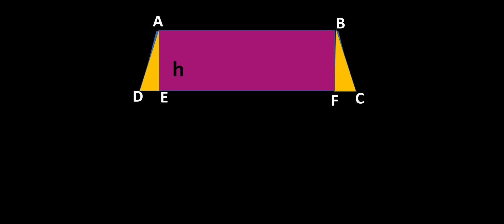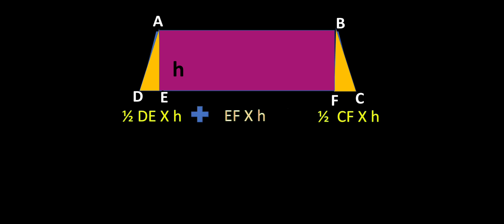Now we have to find the area of each part. As we know, the area of a triangle equals half base into height. We have taken half base into height for one triangle, and the other triangle is also half base into height. The rectangle is length into breadth, where the length is EF and the breadth is the perpendicular distance between the two parallel lines of this trapezium, so we have taken EF into H.